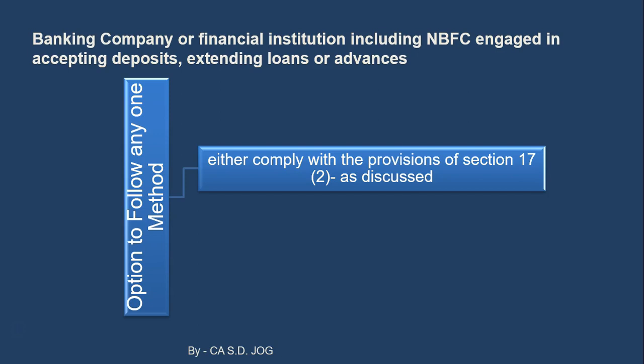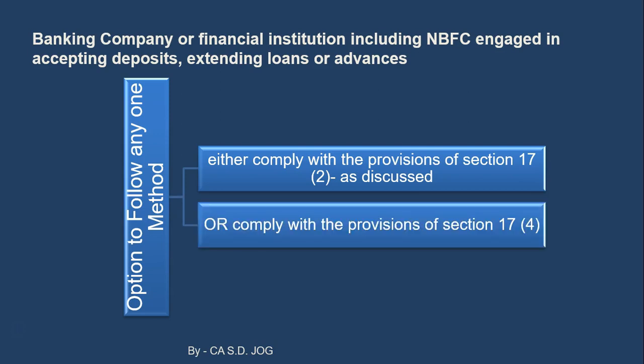If they don't want to go by the detailed calculation, a simple method is also given — they can comply with provisions of section 17 subsection 4. So they can opt for the first option or the second option, but when can they use this option? Can they change it in between at the beginning of the year?